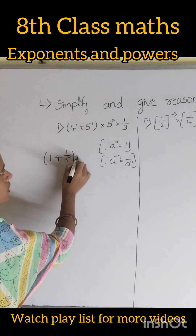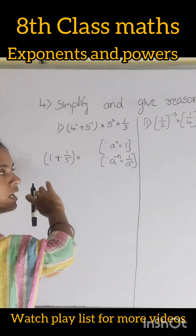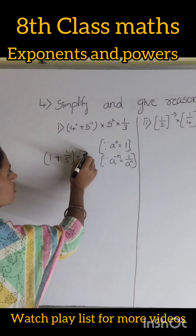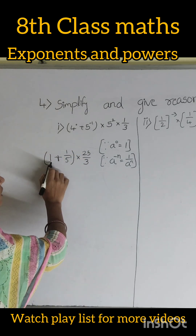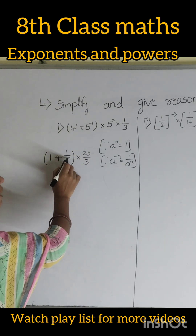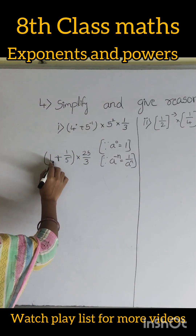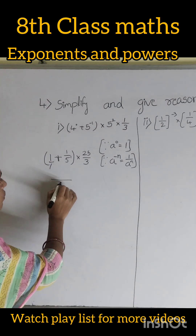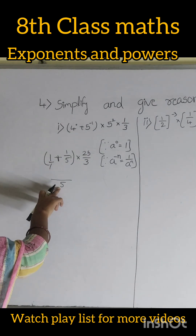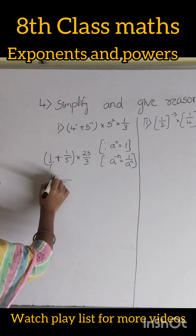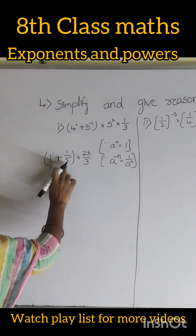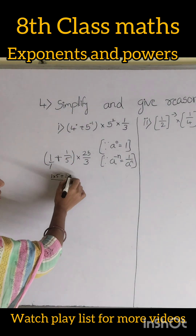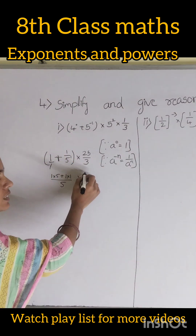5 square means 25, because 5 into 5 is 25. So we have 1 plus 1 by 5, and 25 by 3. The denominator of 1 is 1, so the common denominator becomes 5. That gives 1 into 5 plus 1, which is 5 plus 1, into 25 by 3.